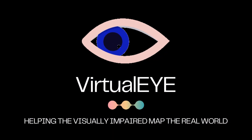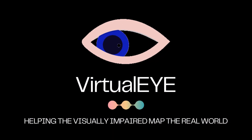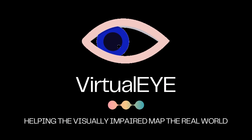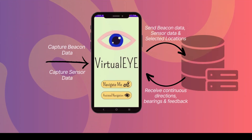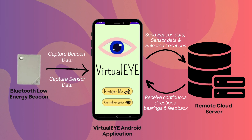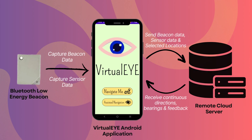Introducing VirtualEye, an indoor navigation tool designed to help the visually impaired map the real world. VirtualEye consists of an Android application that uses the phone's sensors to interact with Bluetooth low-energy beacons. Environment data is continuously captured and sent to a remote cloud server that uses multiple algorithms to localize and navigate the user in real time.